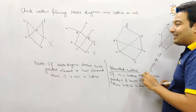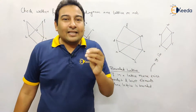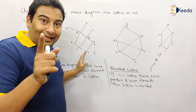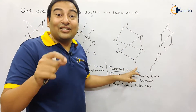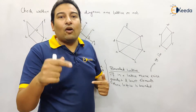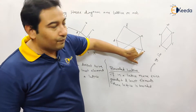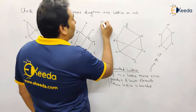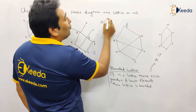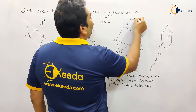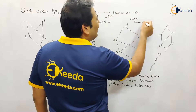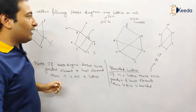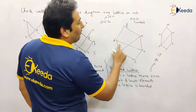What about this Hasse diagram? If you observe, there is a greatest element and there is a least element. First we check whether there is a greatest and least element. If they are not present, it's not a lattice — story over. But if there is a greatest and least element, still we need to check further; then there is a possibility of the Hasse diagram being a lattice. If you check A and B — what is the LUB of A and B? LUB is also called join, and GLB is also called meet.